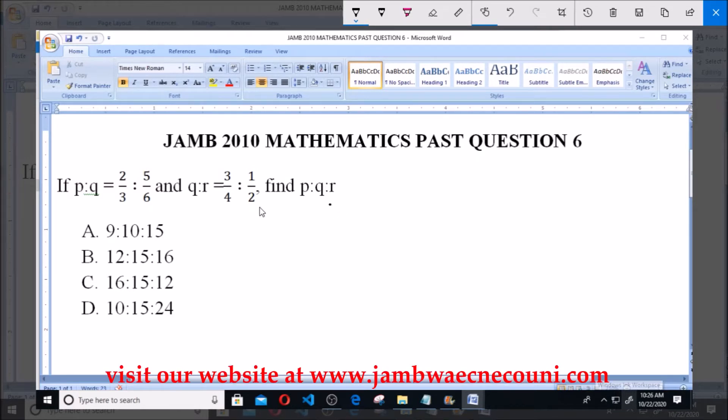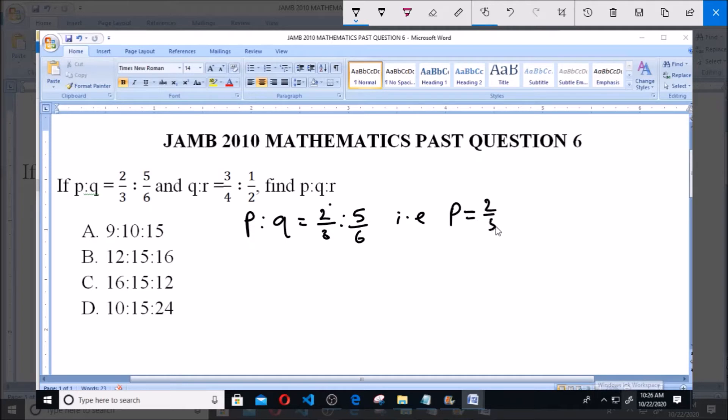Now we're given that first of all, p ratio q equals 2/3 ratio 5/6. That is, from this, p equals 2/3 and q equals 5/6.